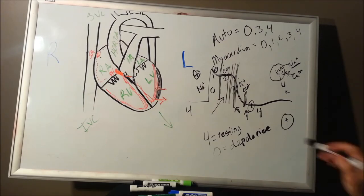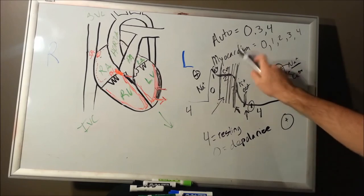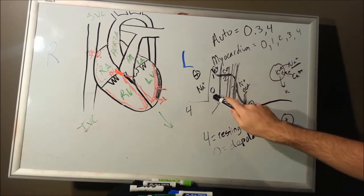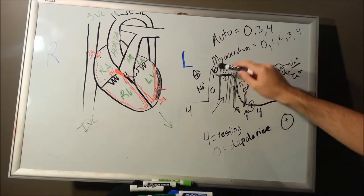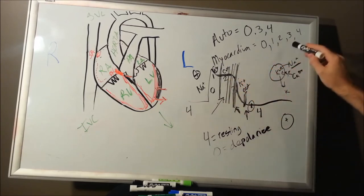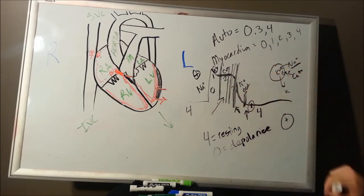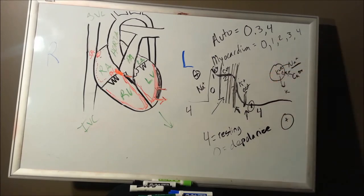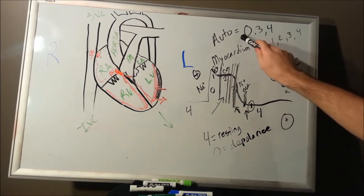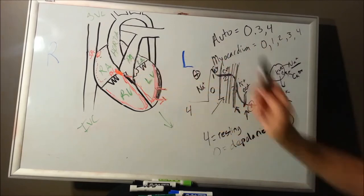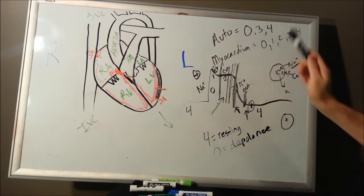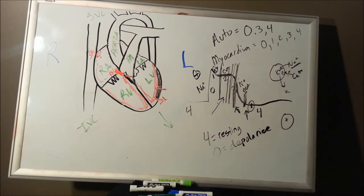This is just for your myocardial cells. To summarize: myocardial cells have phase zero (depolarization), phase one (potassium coming out), phase two (calcium), phase three (repolarization), and phase four (resting). Your automaticity cells — the SA node and AV node — have phase zero (depolarization), phase three (repolarization), and phase four (resting).